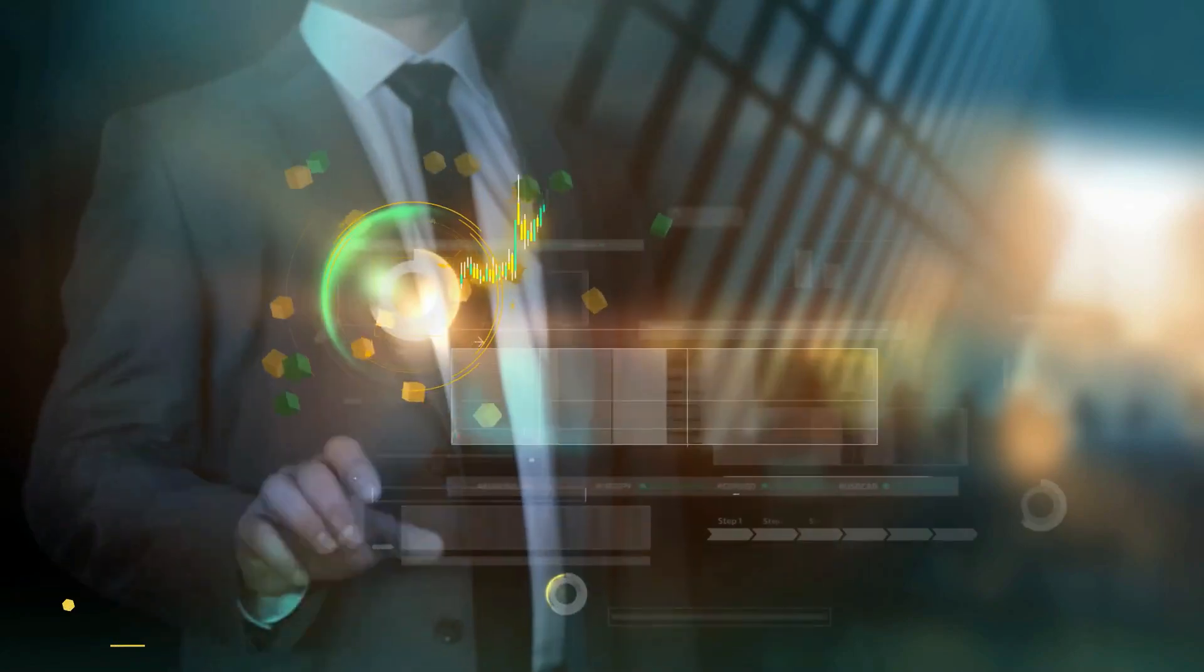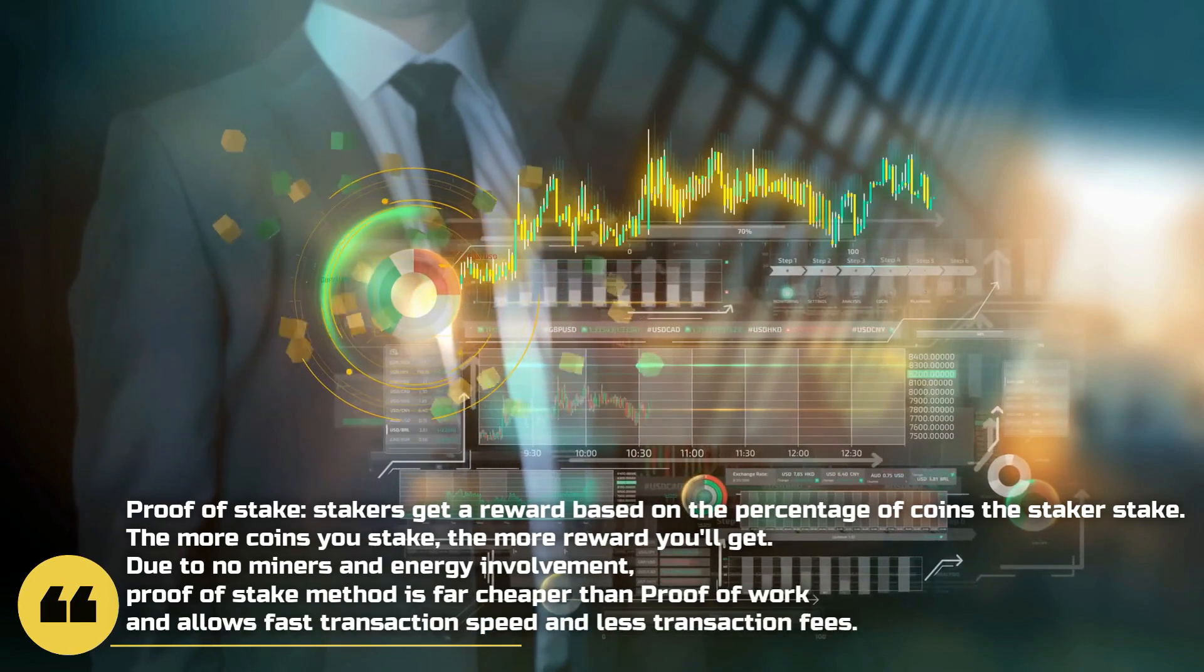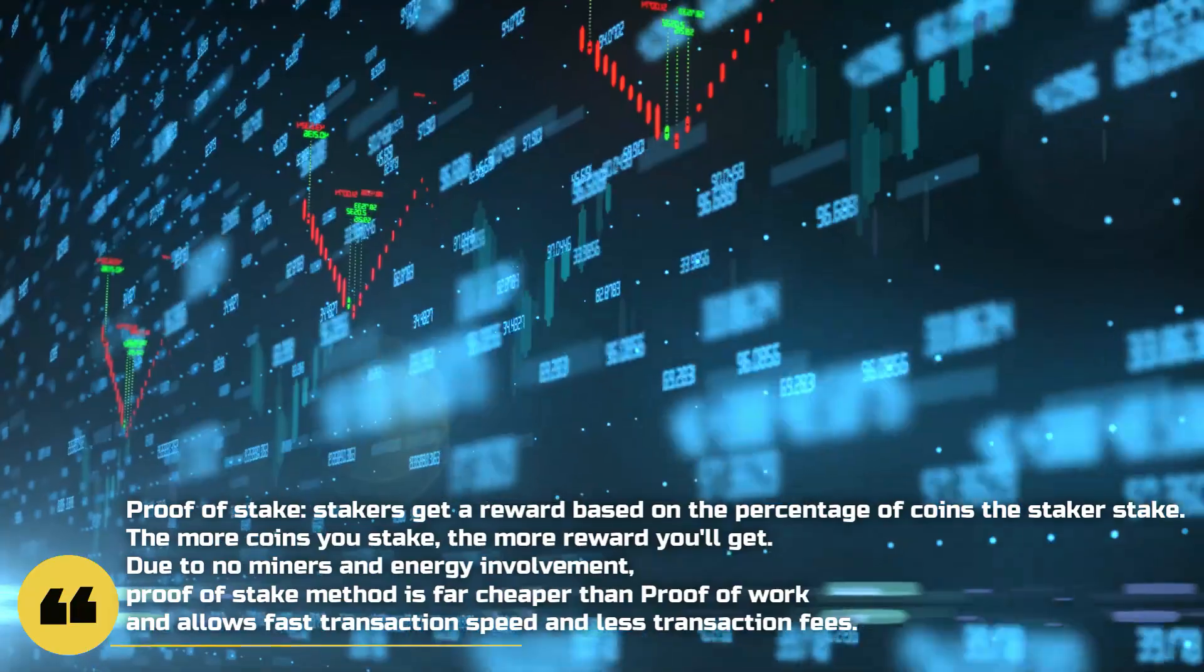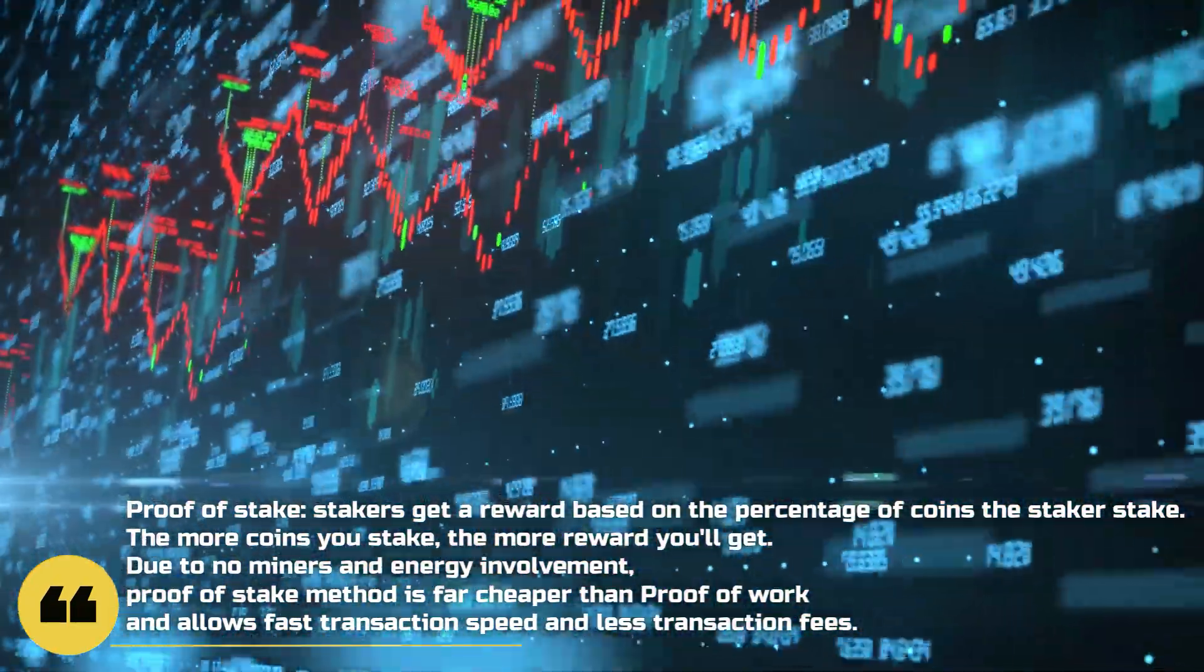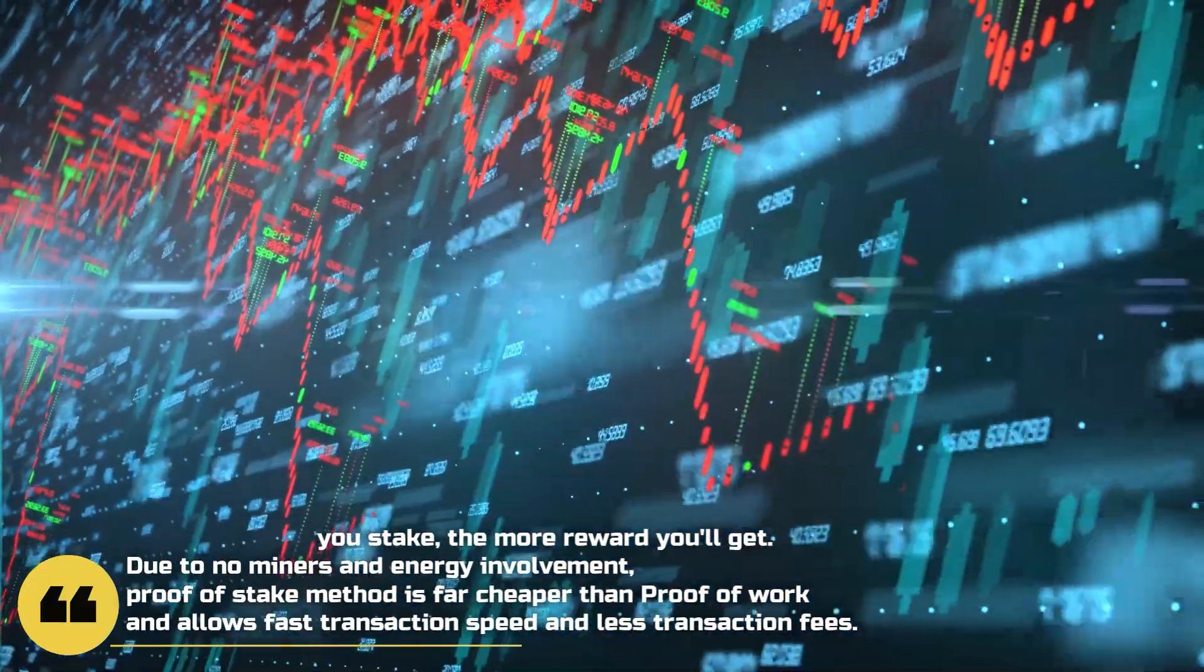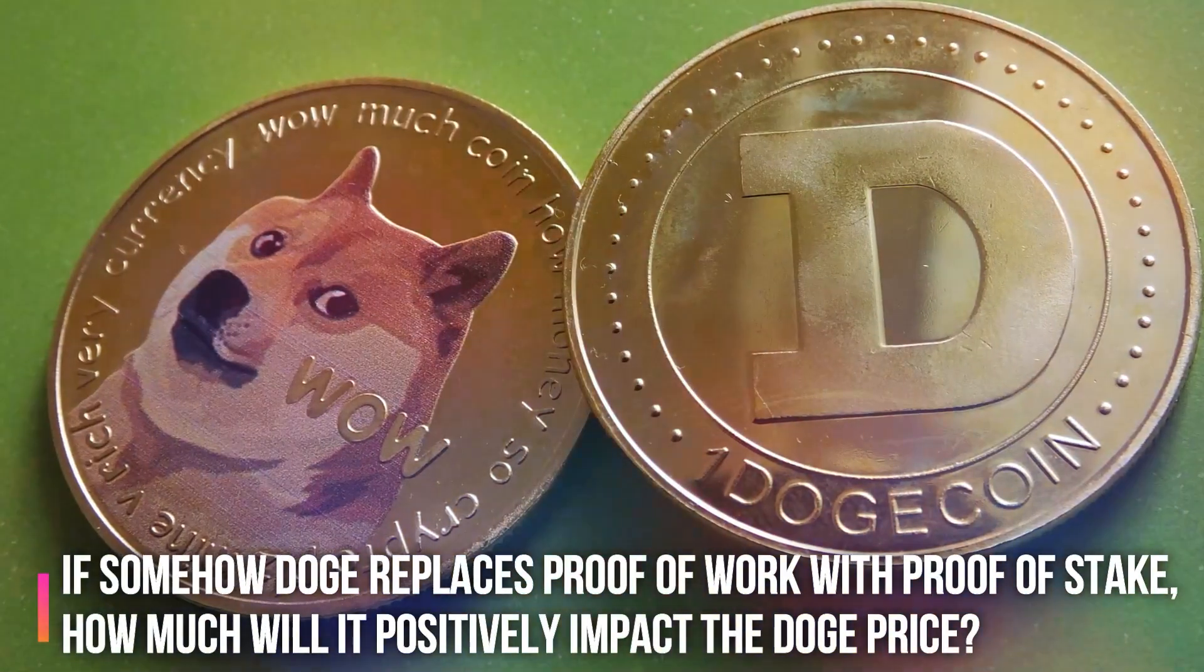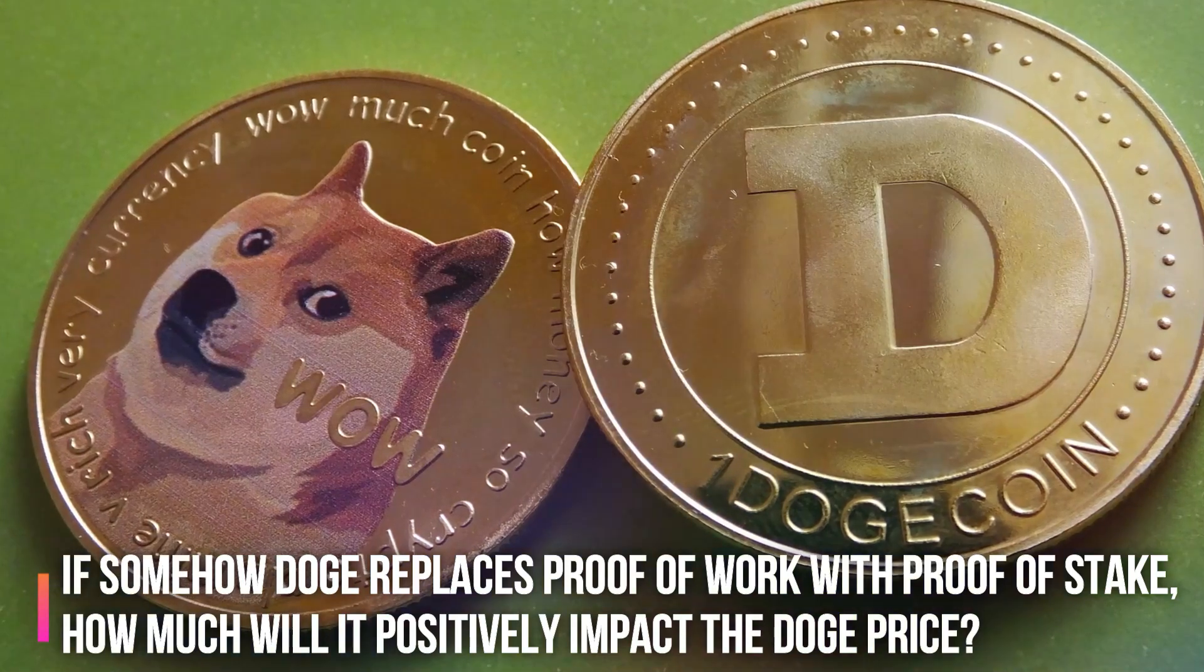At the same time, proof of stake is a method where holders of the coin stake their coins to validate the transaction. This is a cheap, easy method, and no energy is involved. In proof of stake, stakers get a reward based on the percentage of coins the stakers stake. The more coins you stake, the more reward you'll get. Due to no miners and energy involvement, proof of stake method is far cheaper than proof of work and allows fast transaction speed and less transaction fees.